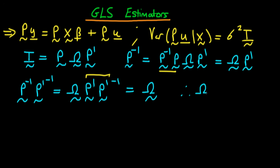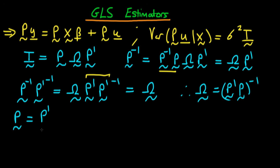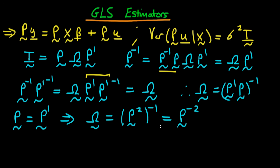We can represent this more simply: omega is just equal to P-transpose times P, all to the power minus 1, because when you take the inverse of a product, the order of multiplication reverses. Now we have omega in terms of P, but what we'd actually like is P in terms of omega. We get this by assuming our transformation matrix P is symmetric, so P equals P-transpose. That implies omega equals P times P — that's P-squared — all to the power minus 1, which is just P to the power minus 2. Therefore, P is simply equal to omega to the power minus one-half.